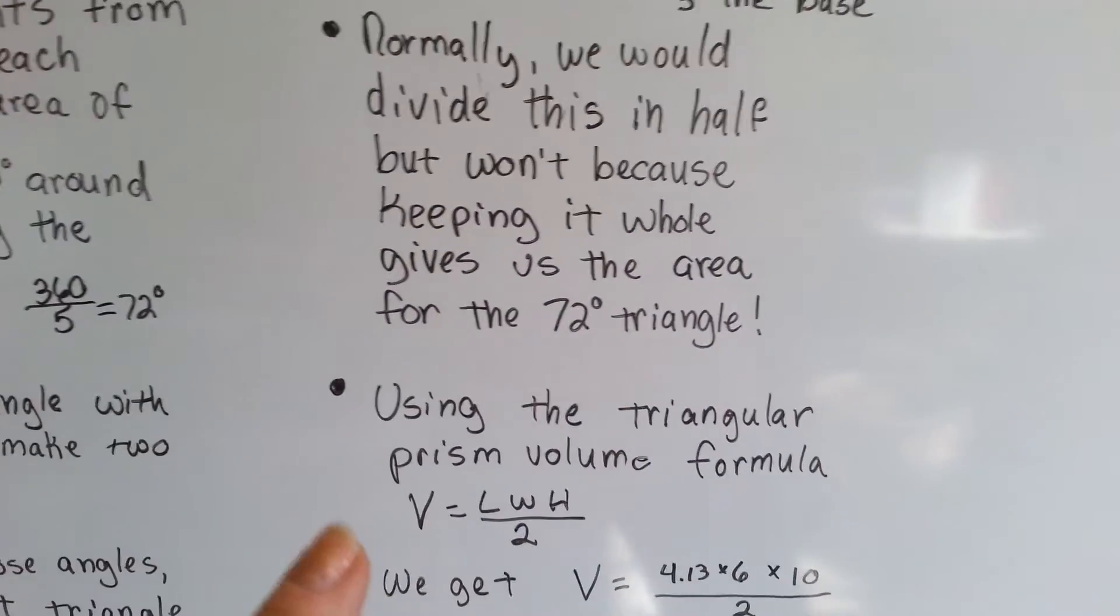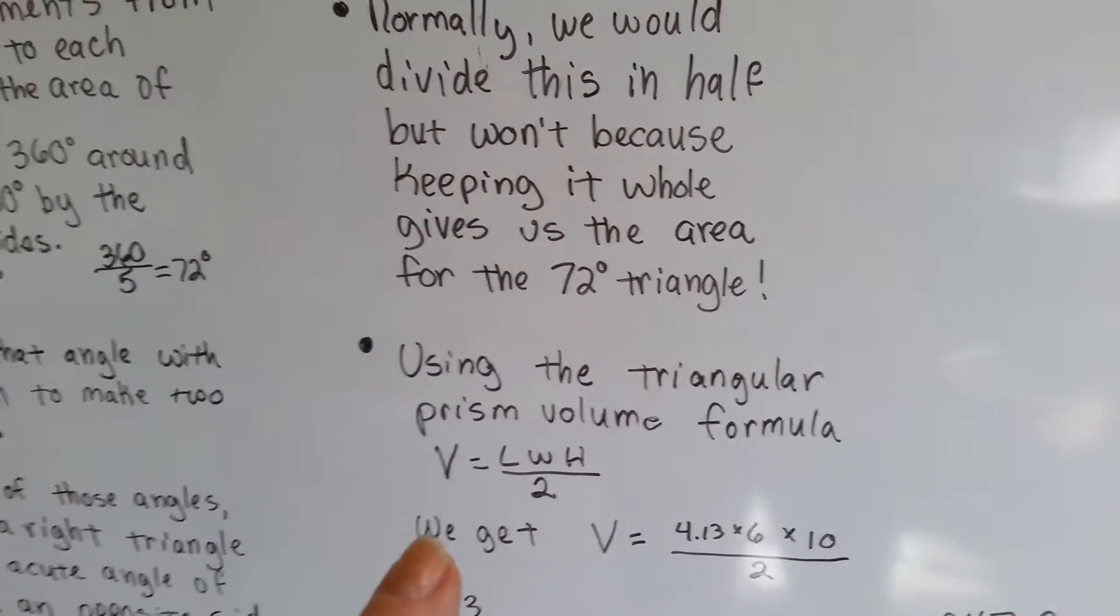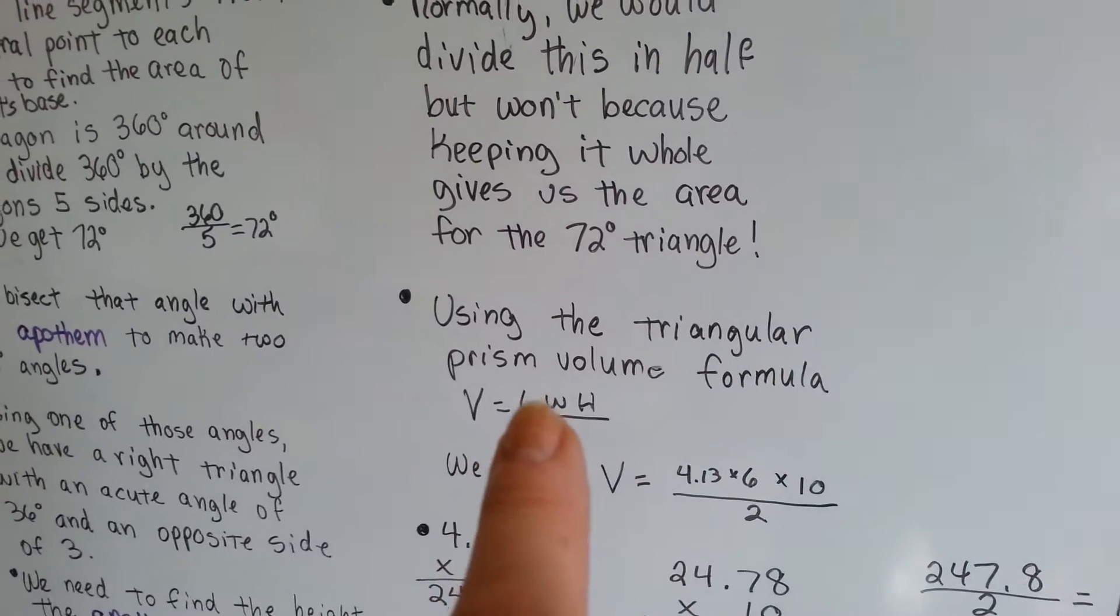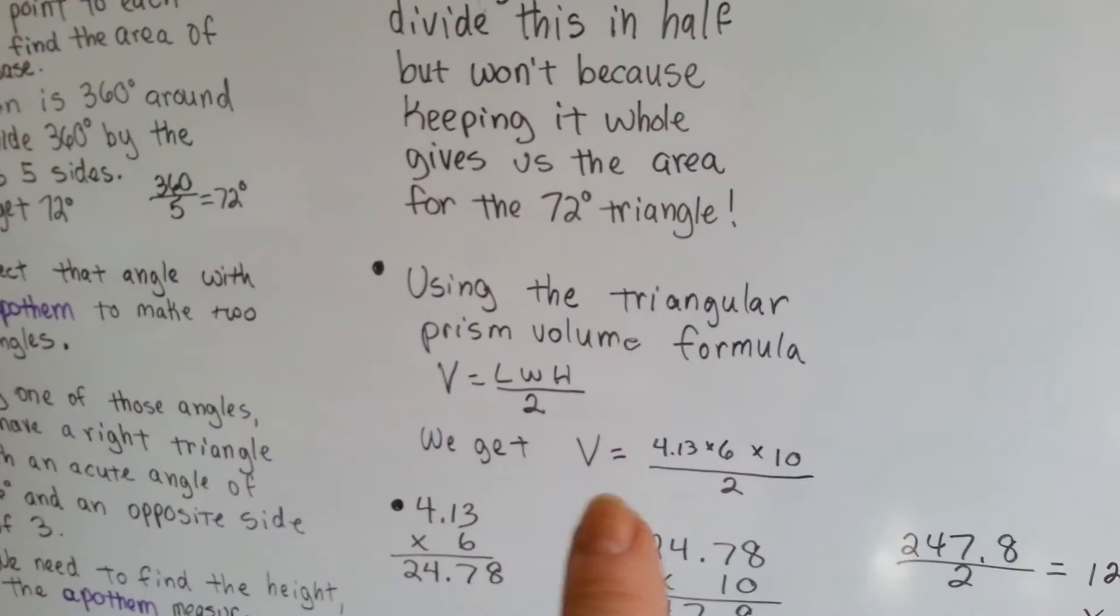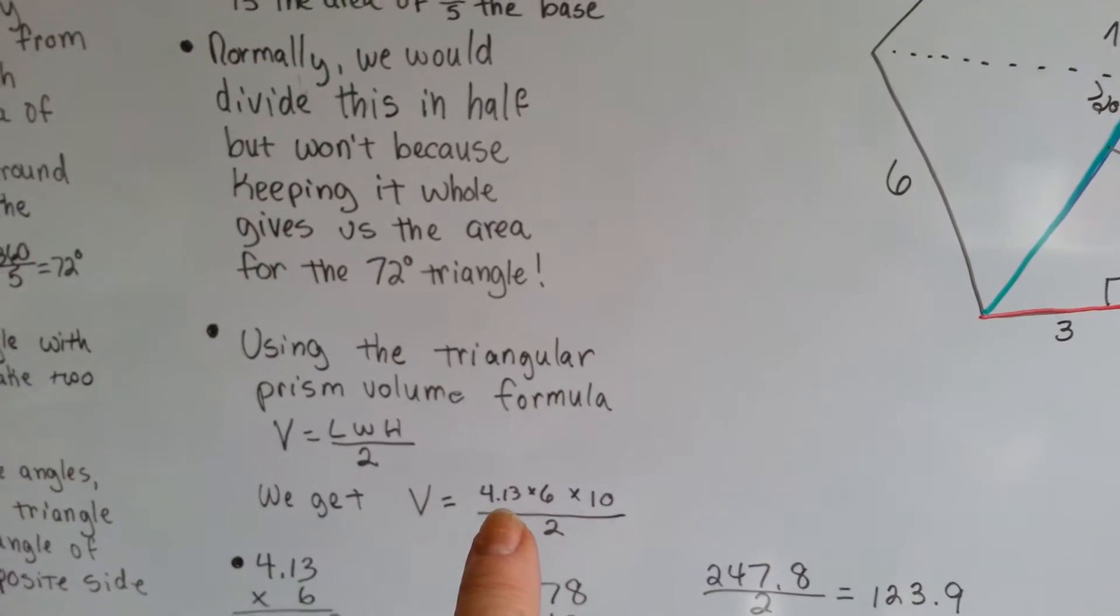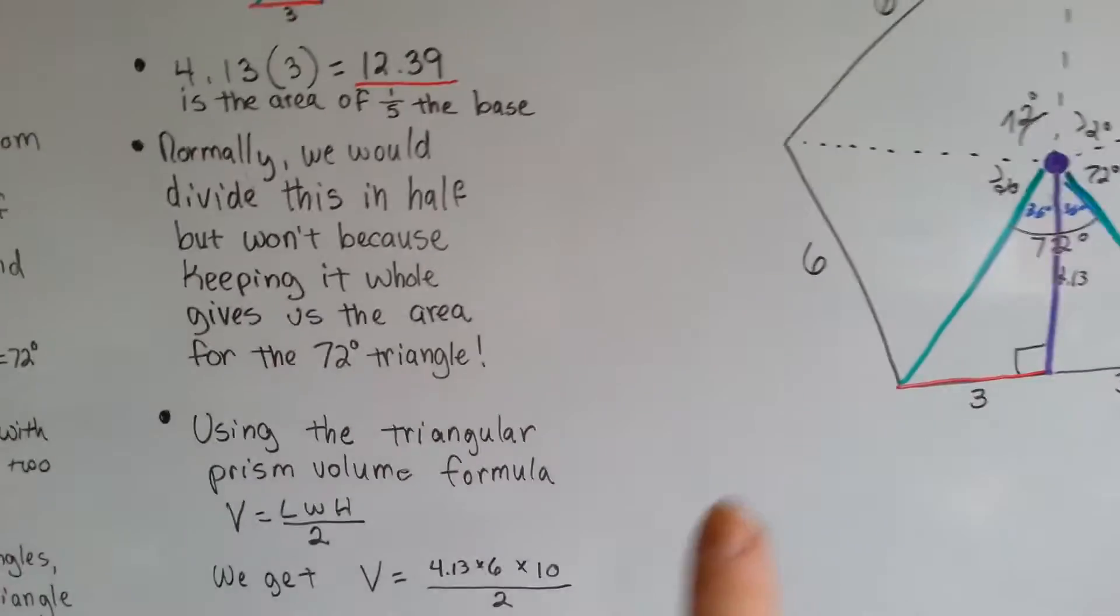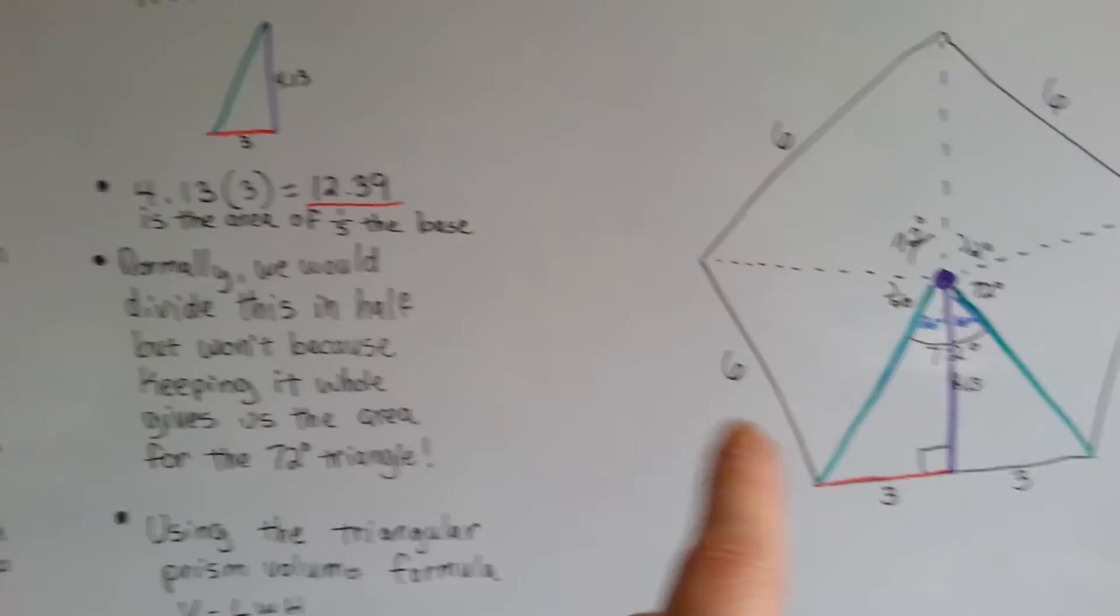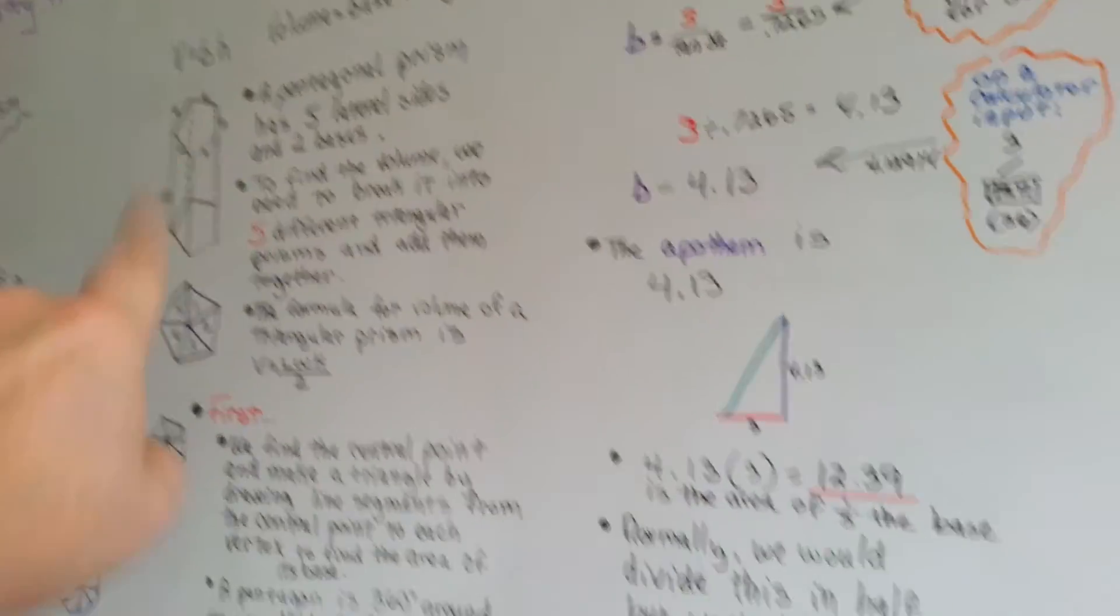Now, using the triangular prism volume formula, that volume is equal to the length times width times height divided by 2, we get that it is 4.13 times 6 times 10. Because each one of these are 6, and our height is 10.